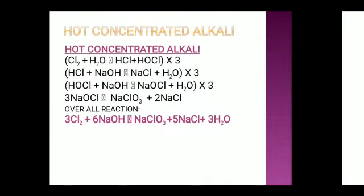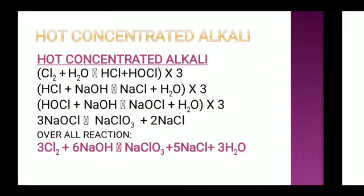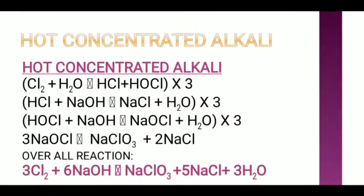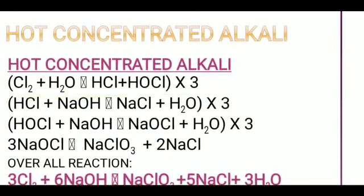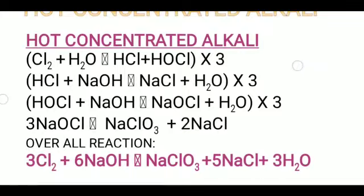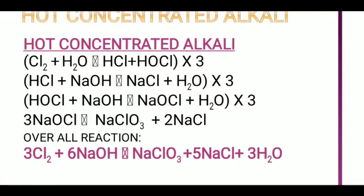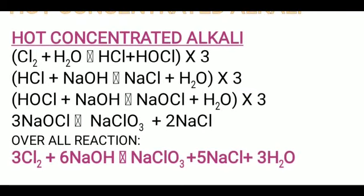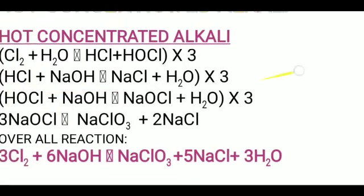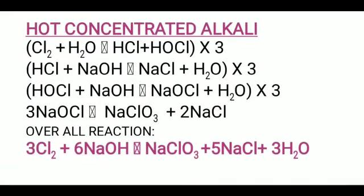Now we move to the reaction of chlorine with hot concentrated alkali. The same three reactions as in the reaction of chlorine with dilute alkali. First reaction: Cl2 plus H2O gives HCl plus HOCl — multiplied by three, because we are taking hot concentrated alkali. So we have to multiply all three reactions by three.